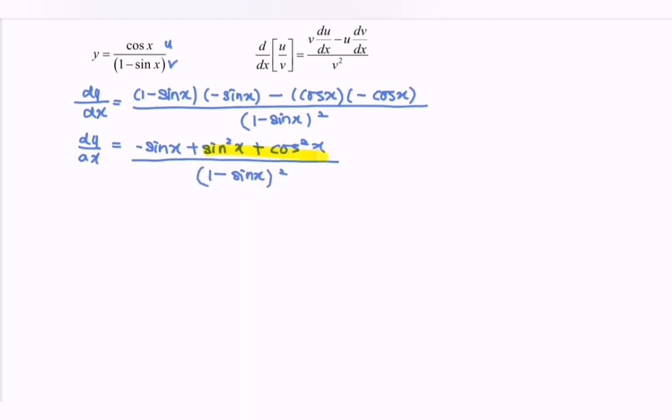So by referring to this part, as we all know, sin square x plus cos square x, which is equal to 1. So that is what we call the basic identity. So we have 1 minus sin x over bracket 1 minus sin x bracket square.